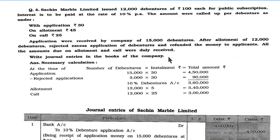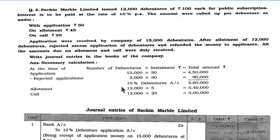Write journal entries in the books of the company. Necessary Calculation: On application, number of debentures multiplied by installment equals total amount. Application 15,000 × 30 = Rs. 4,50,000. Minus rejected application: 3,000 × 30 = Rs. 90,000. So 4,50,000 − 90,000 = Rs. 3,60,000 to debentures account. On allotment: 12,000 × 45 = Rs. 5,40,000. On call: 12,000 × 25 = Rs. 3,00,000.